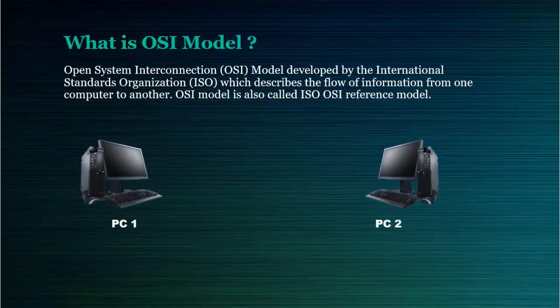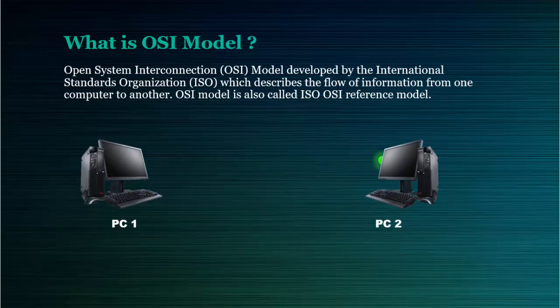For example, we are having two PCs in an office and PC1 is sending data to PC2. In this process, the data will transfer through different layers, and it is well explained by the OSI Model.